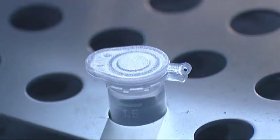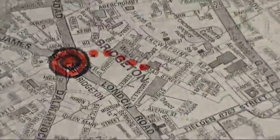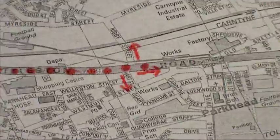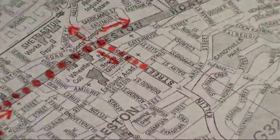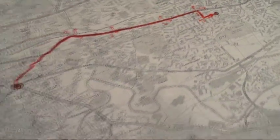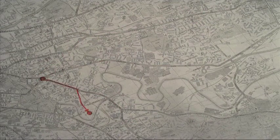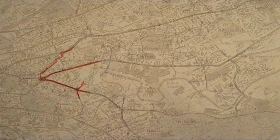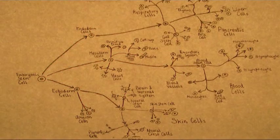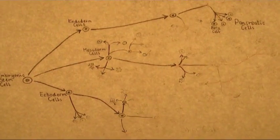A stem cell goes through a long series of decisions to become a specialised cell. A combination of internal and external signals guide each stem cell along the path towards specialisation. These signals are normally provided by the body. By figuring out how to recreate these signals in the lab, scientists aim to grow pure populations of almost any cell type.